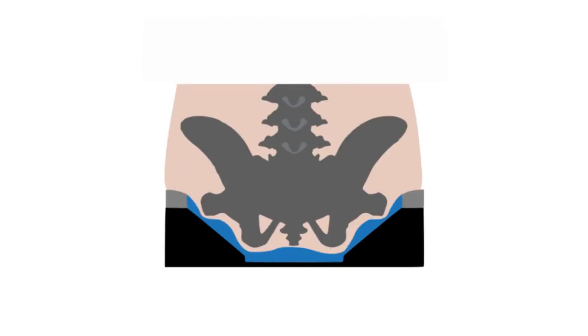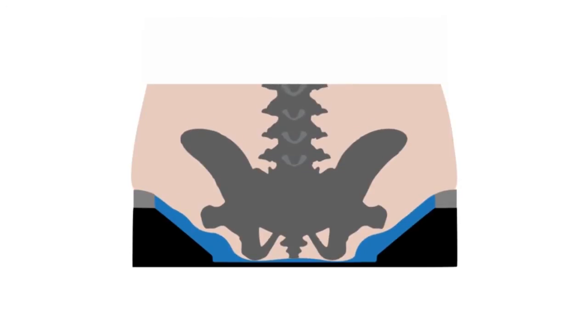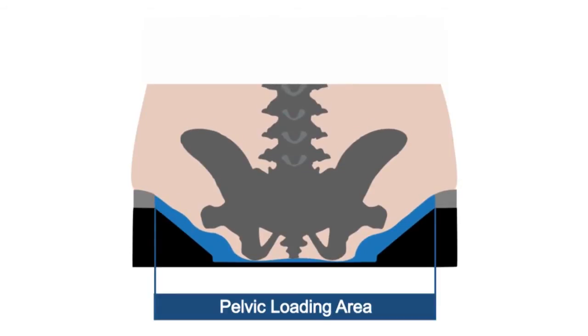In the smaller sizes, the trochanter bones rest on the PLA, fully suspending the ischial tuberosities in the fluid. If the PLA becomes wider than the trochanters, an unsupported pelvis can sink to the bottom of the fluid pad.